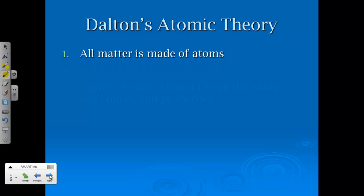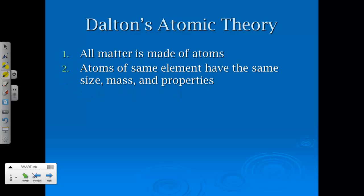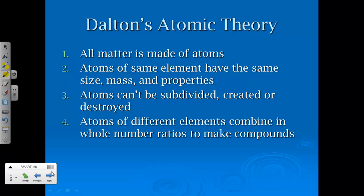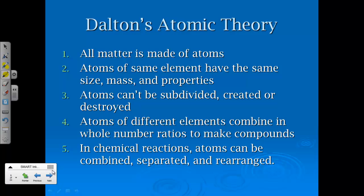And those five main ideas included the fact that all matter is made of atoms. Atoms in the same element have the same size, mass, and properties. Atoms cannot be subdivided, created, or destroyed. Atoms in different elements combine in whole number ratios to make compounds. And in chemical reactions, atoms can be combined, separated, and rearranged. So again, if our definition of theory simply states an explanation, this was his idea, or his explanation, of the law of conservation of mass, the law of multiple proportions, and the law of definite proportions. And he did pretty well for the time being.